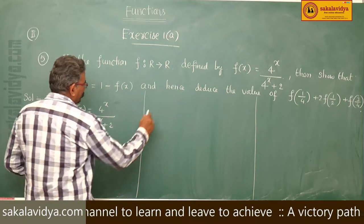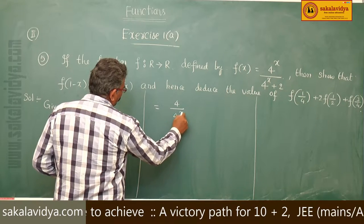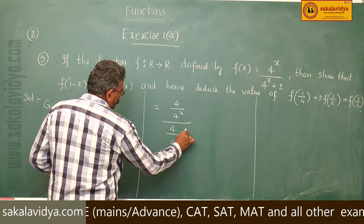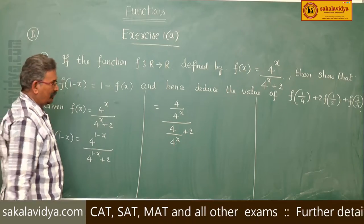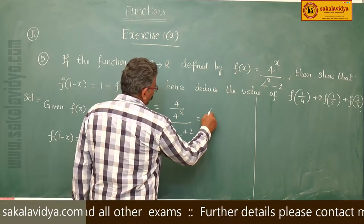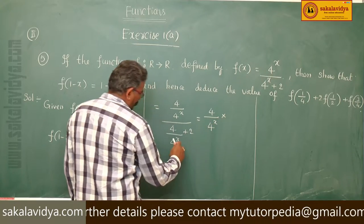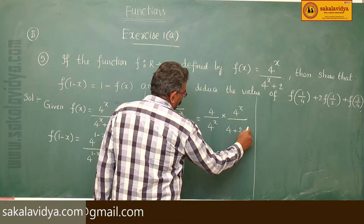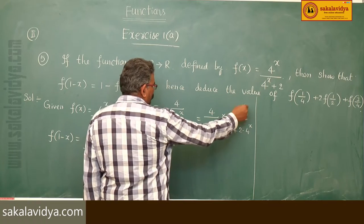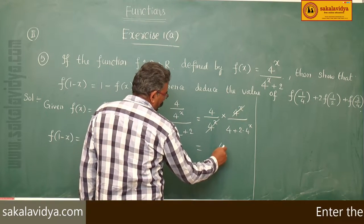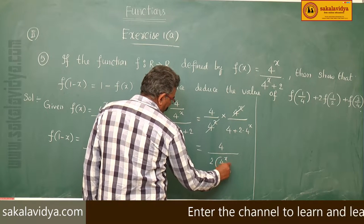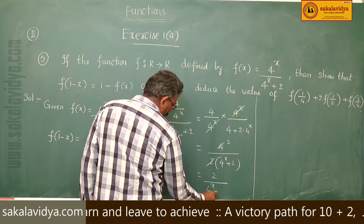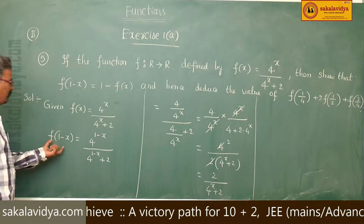This is equal to 4 by 4 power x, divided by 4 by 4 power x plus 2. We can write this as 4 by 4 power x multiplied by 4 power x, over 4 plus 2 into 4 power x. The 4 power x terms cancel, giving us 4 by 4 power x divided by 4 by 4 power x plus 2. This is the f of 1 minus x value.